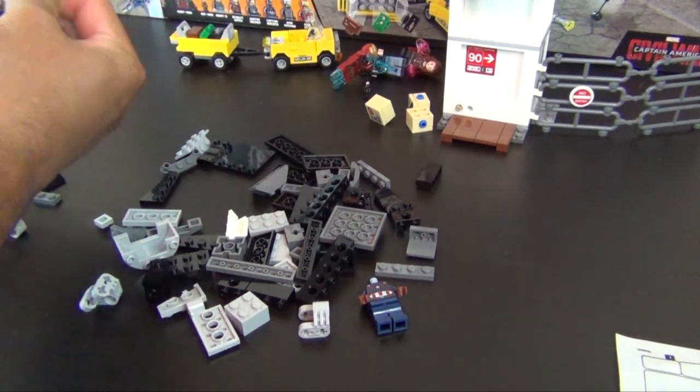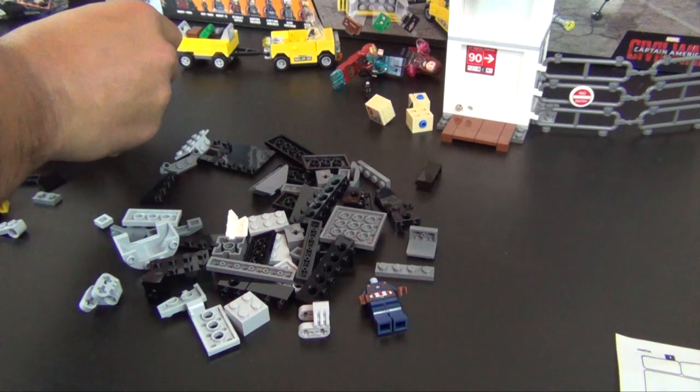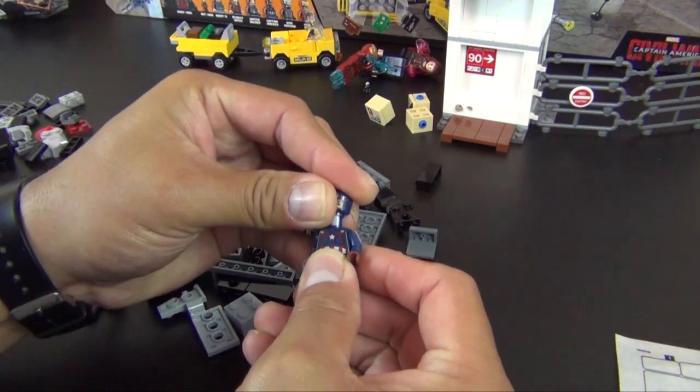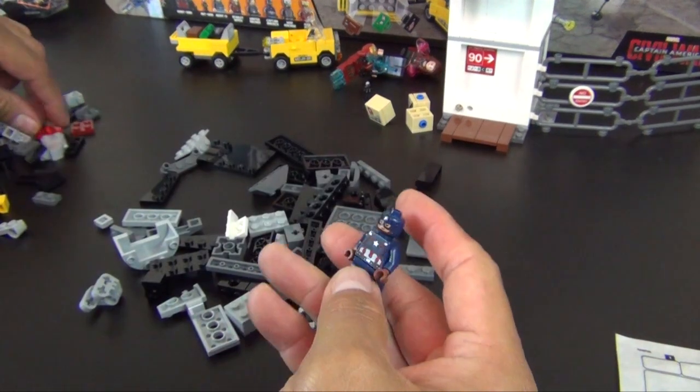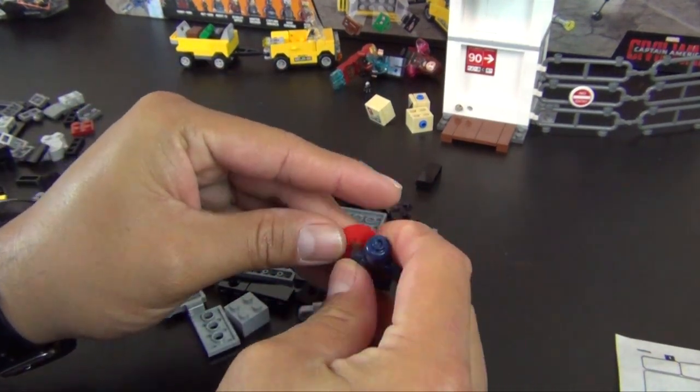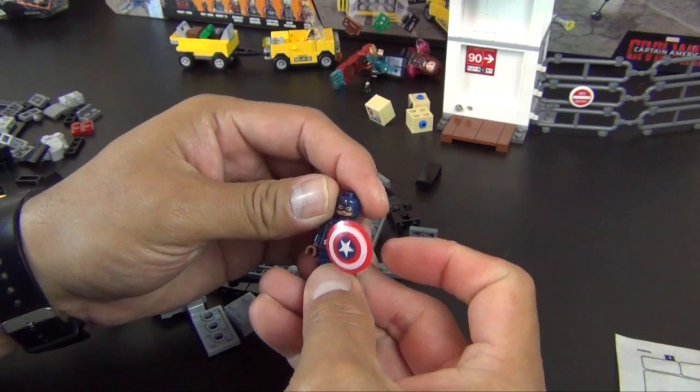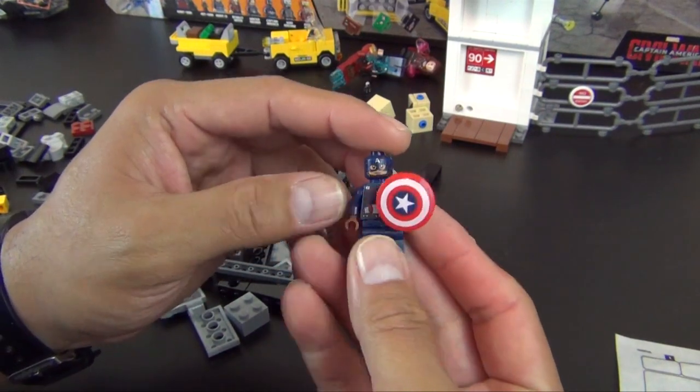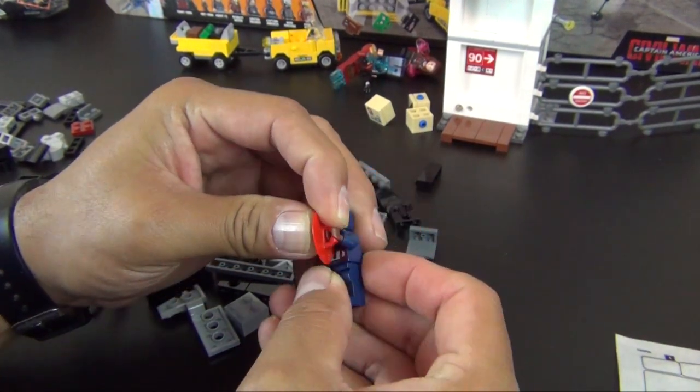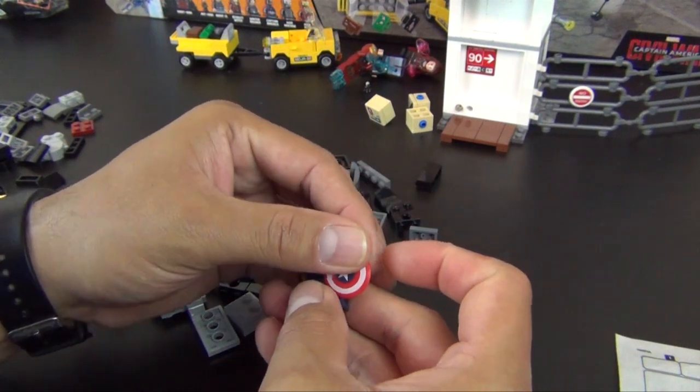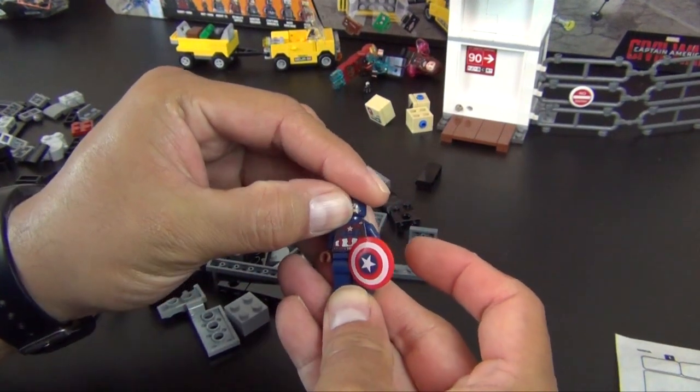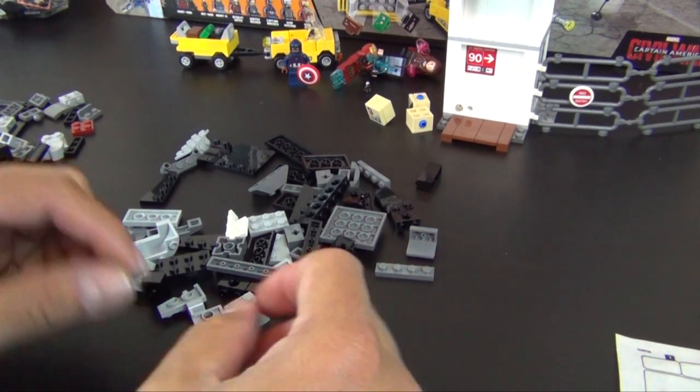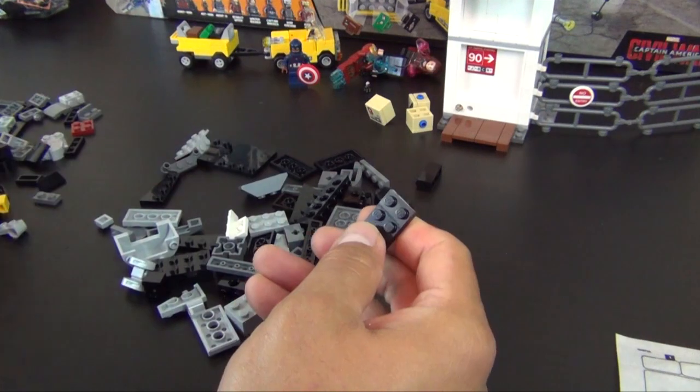We do have an actual minifigure. We have Captain America in this bag. So there's his shield. He just has a single printed face, obviously because it's his mask that he's wearing. So that is Captain America. Put him off to the side and let's move on to this cool brick built figure.